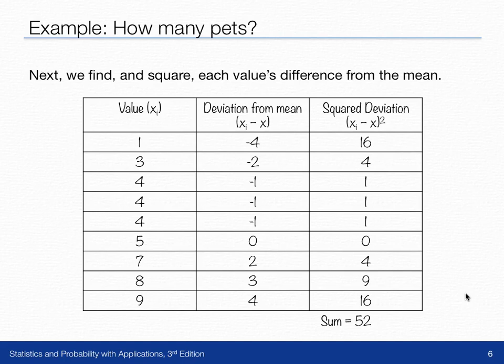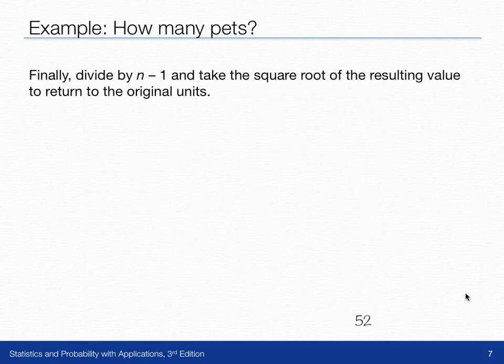We're going to take the sum of the squared deviations and place it in the numerator of a fraction. We're going to divide that fraction by n minus one,